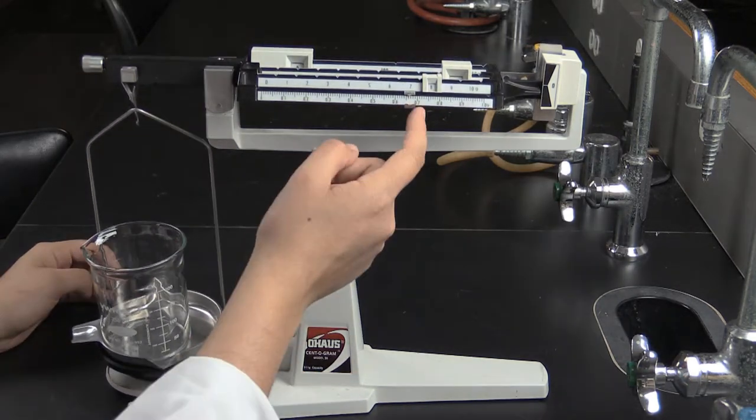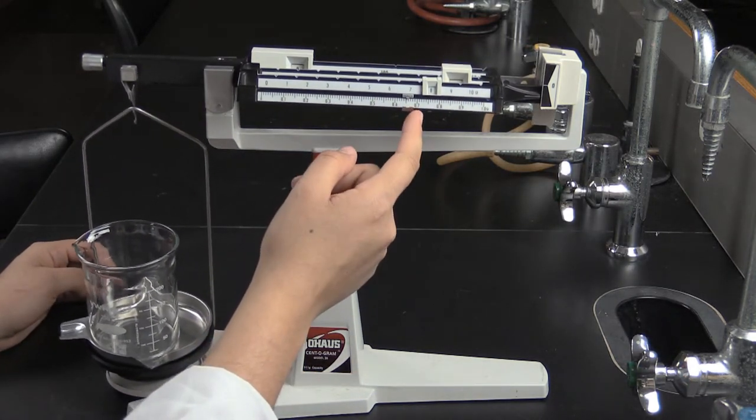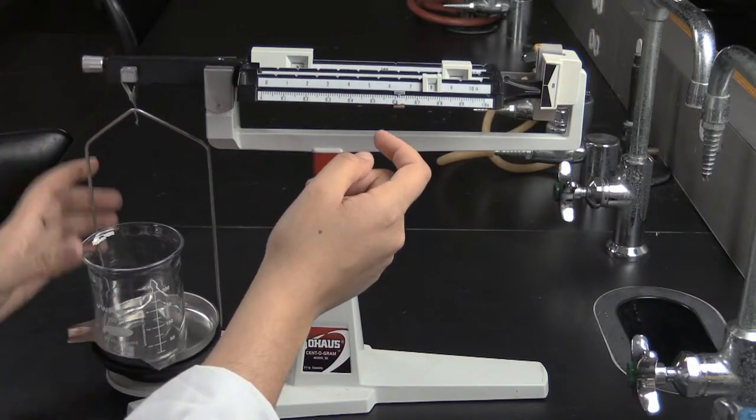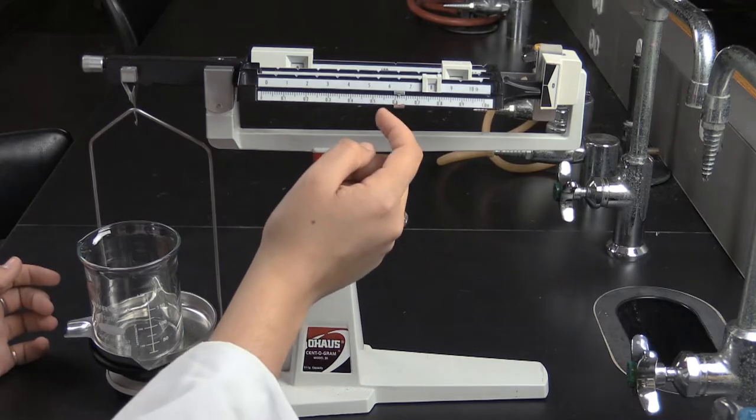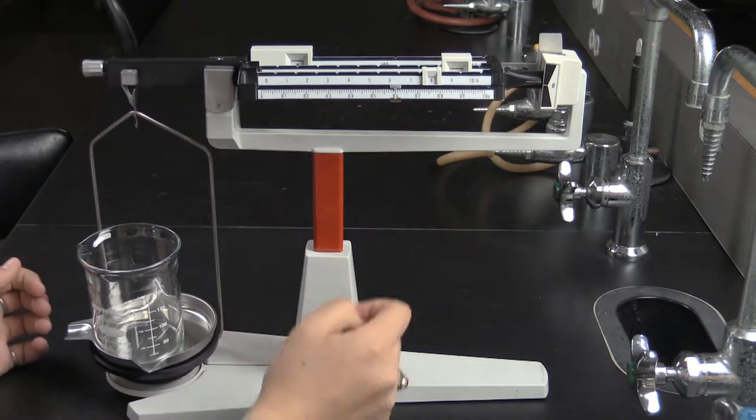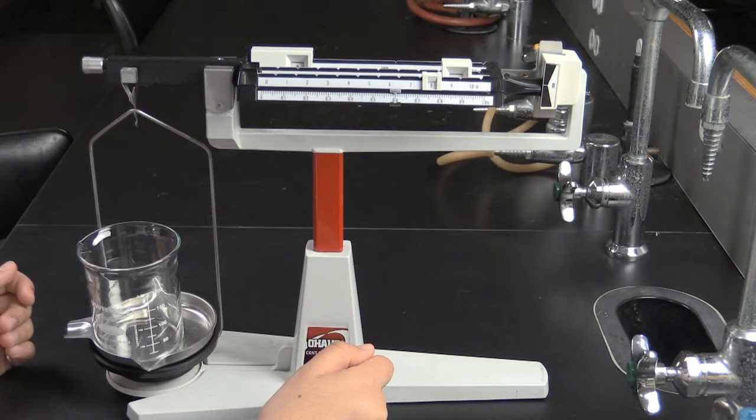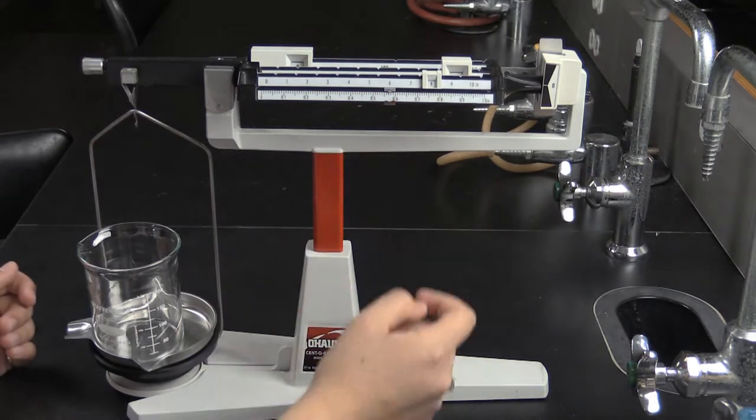Do this for each subsequent beam, being careful to make sure that the beam is still lower on the left side than on the right. For the sliders where there are notches in the beam, make sure that the slider is firmly in the notch. For a proper reading, they are not to be between notches.